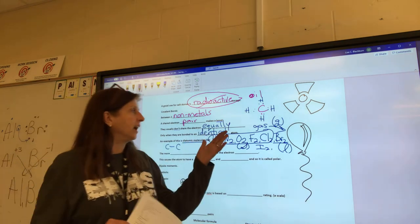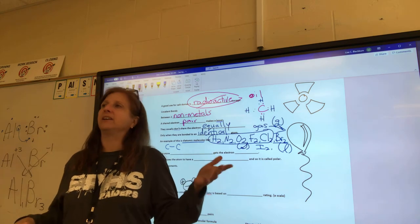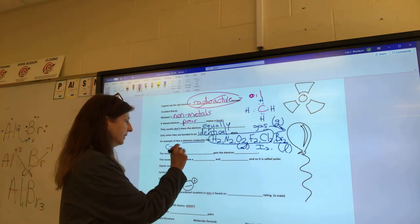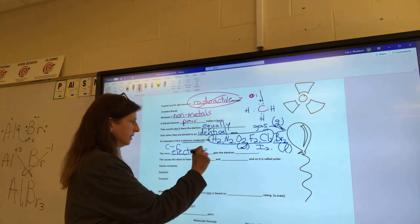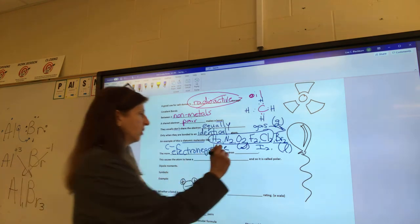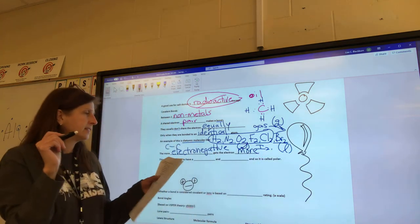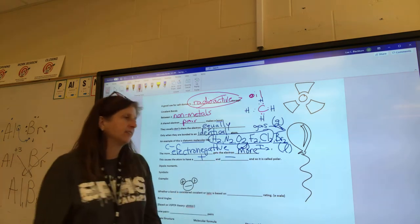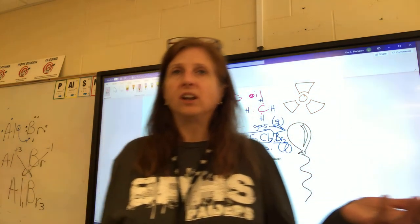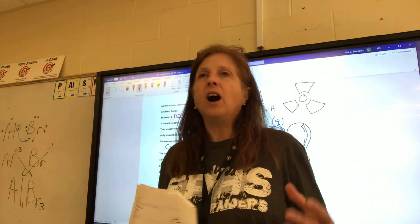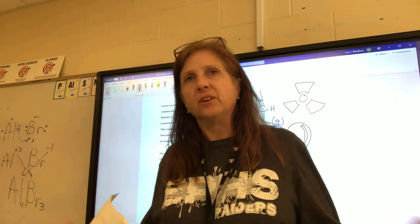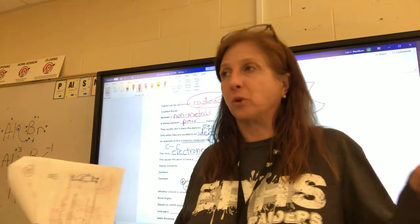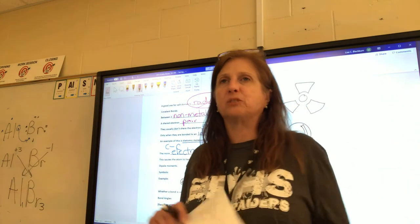Which one gets more of the electron? Just like how divorced parents don't usually share equally — usually the mom gets the kid more — with elements it is the one that is more electronegative that gets the electron more. This causes the atom to have a positive and a negative side. It's not an electron transfer like with ionic bonds. In water, oxygen keeps the electron more than the hydrogens do, so the oxygen is more negative and the hydrogens are more positive.